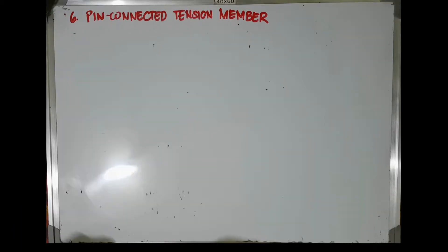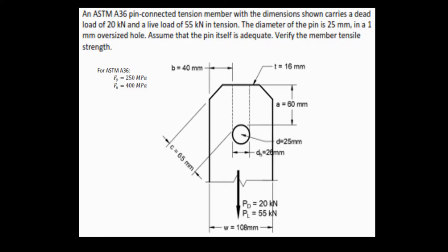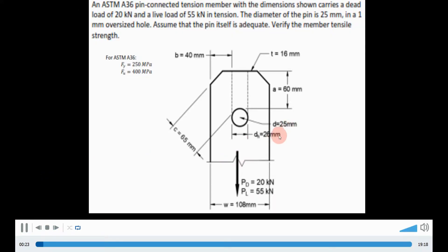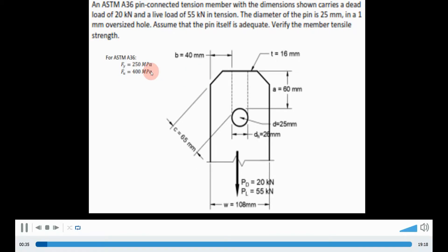For example number six, we will analyze a pin-connected tension member. An ASTM 836 pin-connected tension member with the given dimensions carries a dead load of 20 kN and a live load of 55 kN in tension. The diameter of the pin is 25 mm in a 1 mm oversized hole. Assume the pin itself is adequate. For ASTM 836, the yield stress is 250 MPa and the tensile stress is 400 MPa. The width of the pin connection is 108 mm and the thickness is 16 mm.